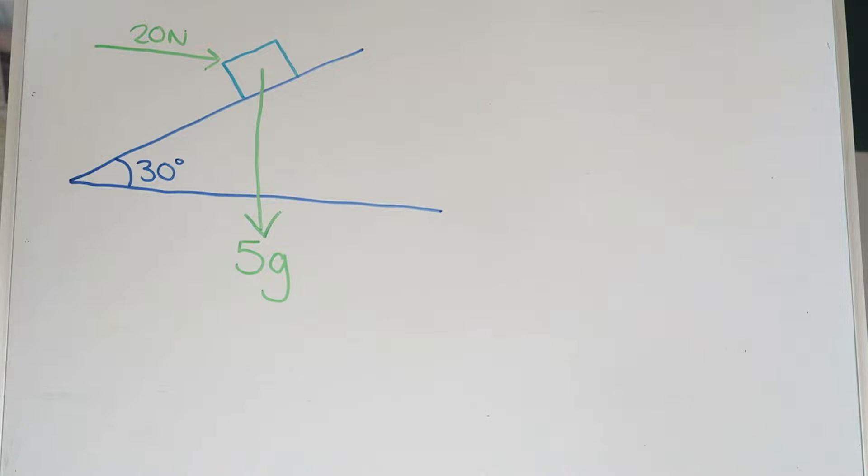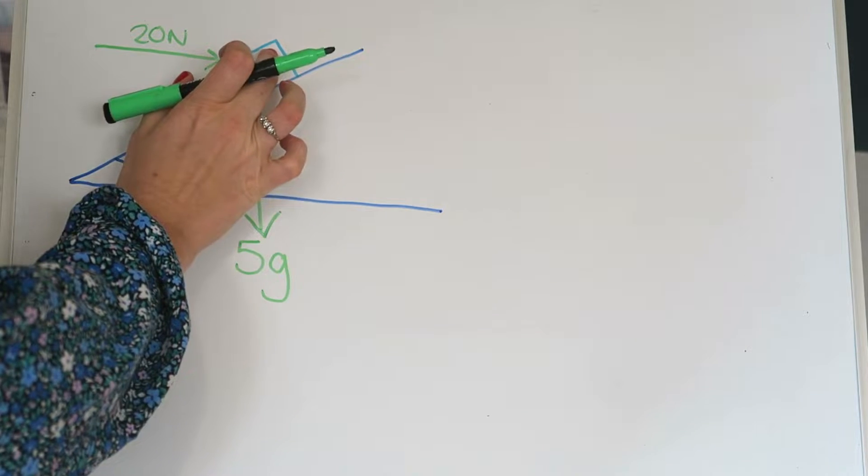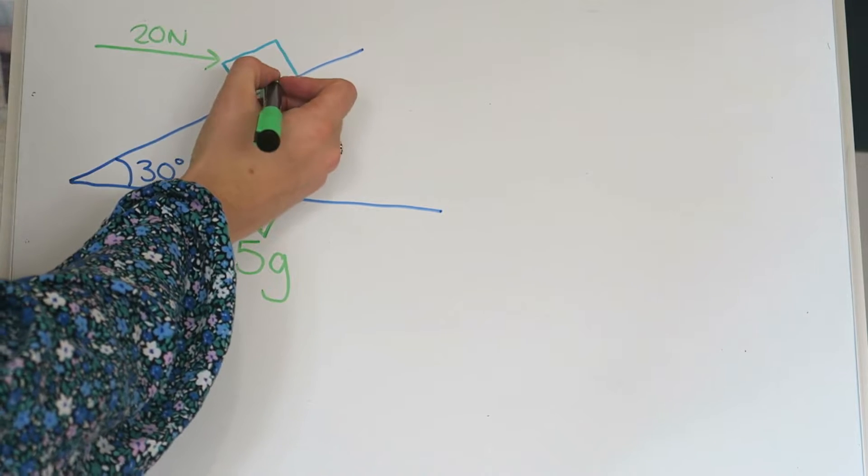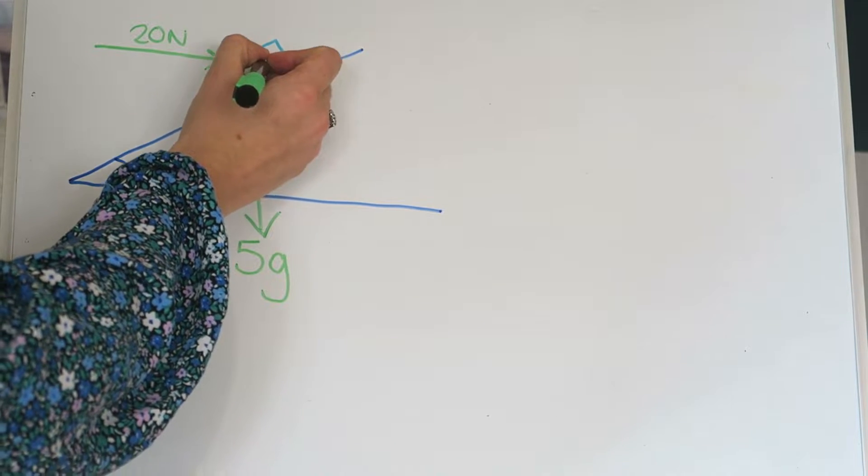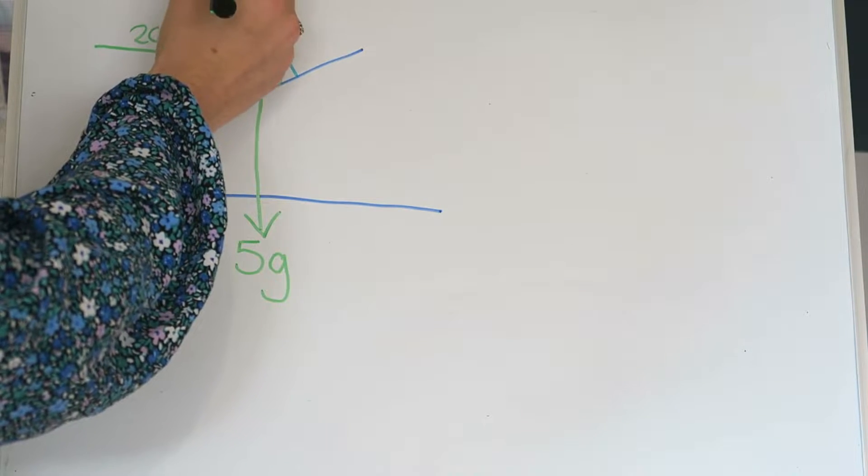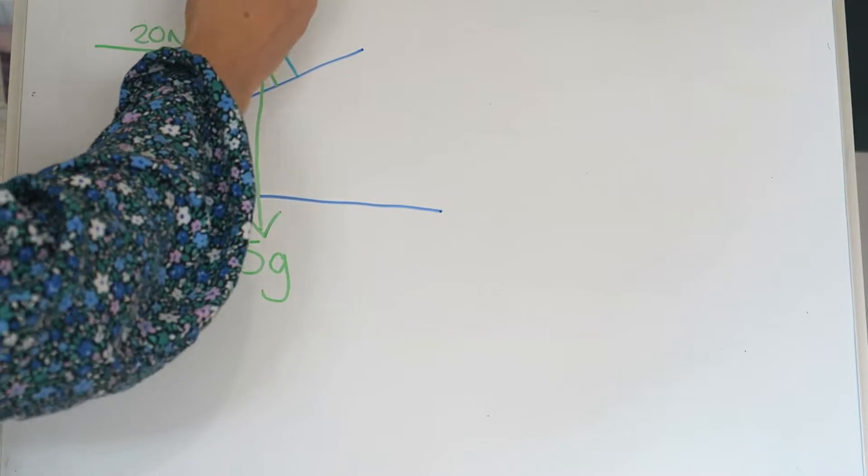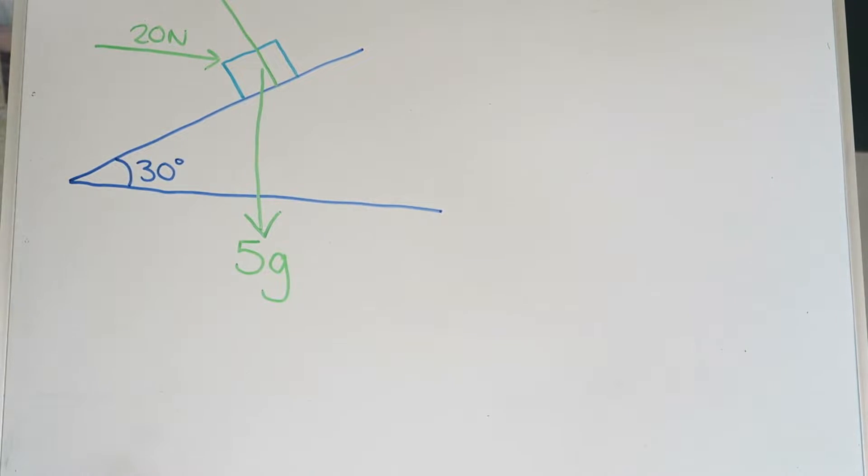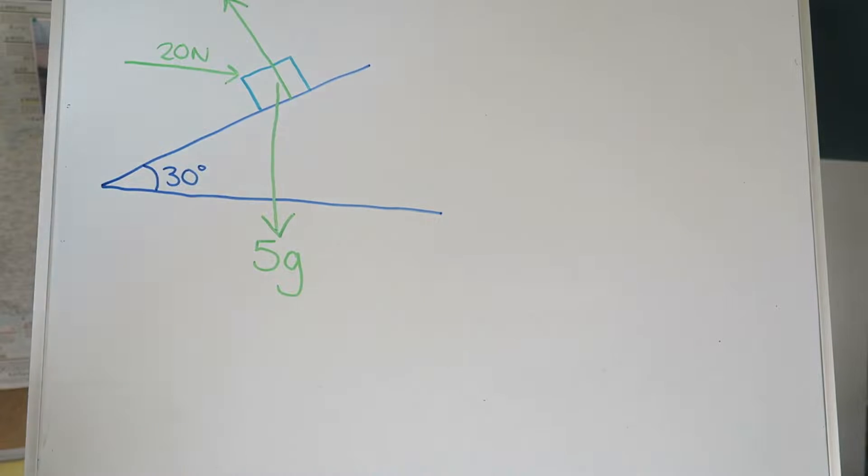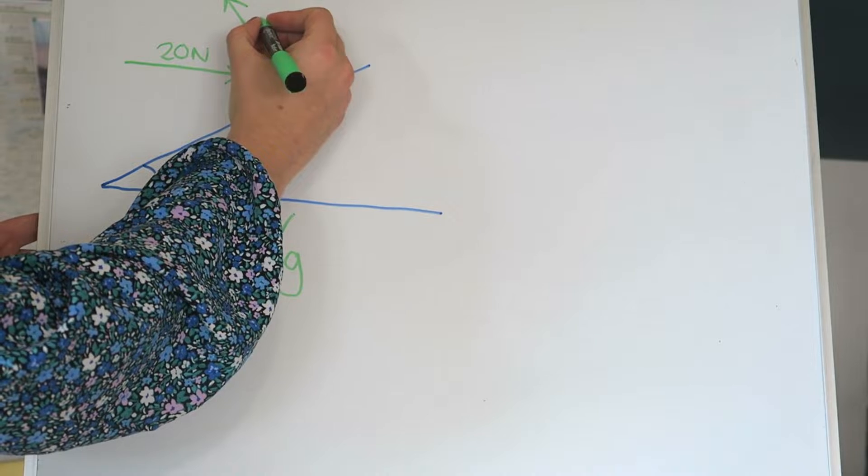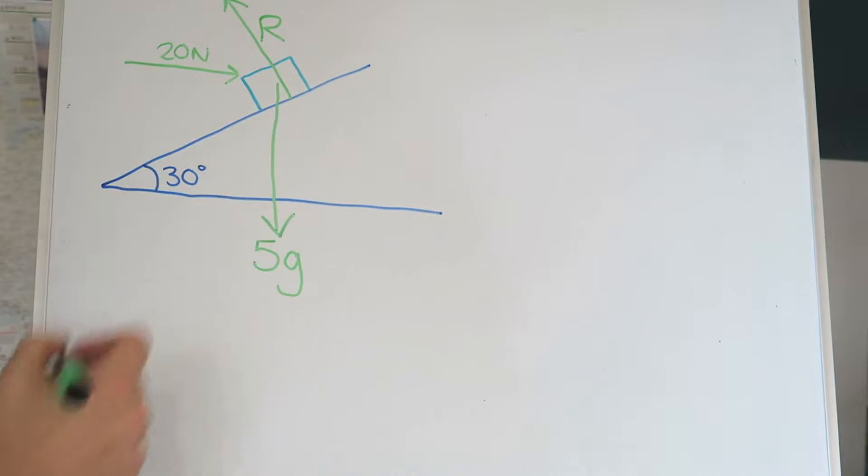And what else do we have? We've got any time that there's something touching a plane or touching something else, there's always going to be a normal reaction going against that thing that's perpendicular to the slope. So it's the slope reacting against the brick, so it's going that way upwards. And because we're not told how much that is, we'll just label it with a letter, and the letter we tend to use for reactive forces is capital R, so I'll put that on there.